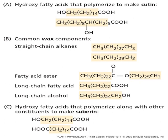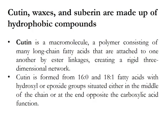Hydroxy fatty acids polymerize to make cutin. Common wax components are straight-chain alkanes, and hydroxy fatty acids polymerize along with other constituents to make suberin. Cutin is a macromolecule — a polymer of many long-chain fatty acids attached to each other by ester linkages, creating a rigid three-dimensional network. Cutin is formed from C16:0 and C18:1 fatty acids with hydroxyl or epoxide groups situated either in the middle of the chain or at the end opposite the carboxylic function.